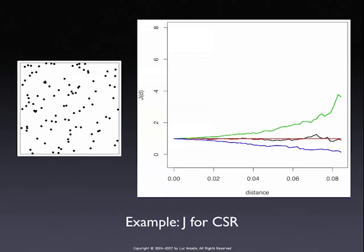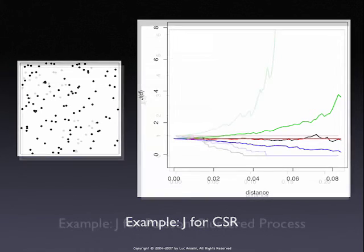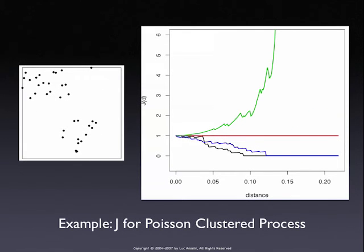For a Poisson cluster process illustrated with these point patterns, the black line is below the envelope for most of the interesting range of distances — indicating clustering. Because it is outside the envelope, we reject the null hypothesis of complete spatial randomness.